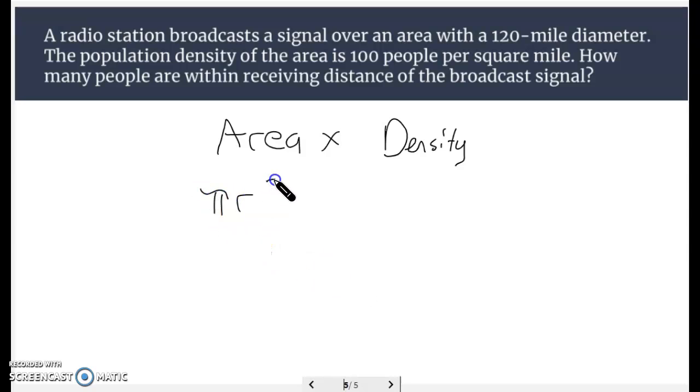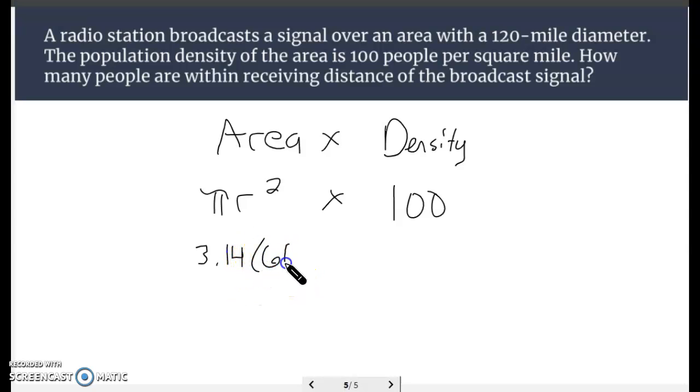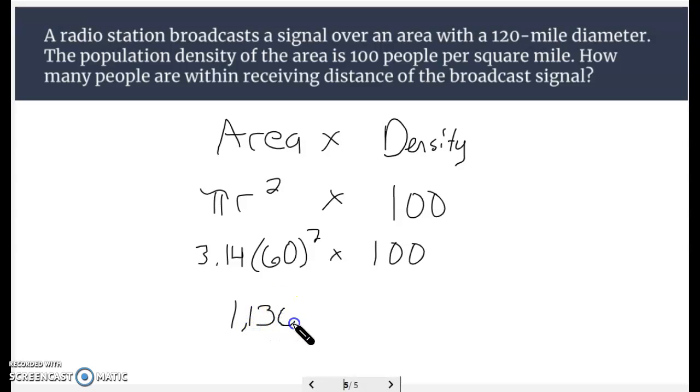Remember pi r squared and then times this 100, pi being 3.14. Notice they give us the diameter. We've got to cut that in half to get 60. 60 squared times 3.14 multiplied times 100 equals 1,130,400 people.